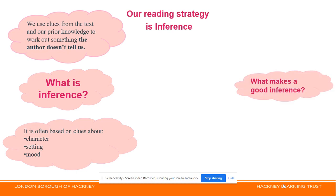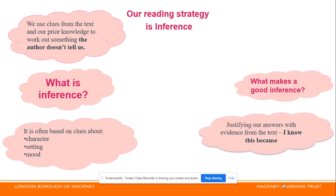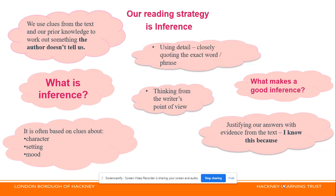So what makes a good inference? A good inference is made when we justify our answers using evidence from the text — for example, 'I know this because...' We think from the writer's point of view, using detail, closely quoting the exact quote or phrase to build on our answer, and finding more than one piece of evidence.